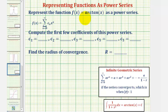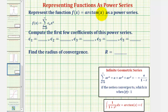We want to represent the function f(x) = arctan(x) as a power series, compute the first few coefficients, and find the radius of convergence. The given function does not resemble the formula for the infinite sum of a converging geometric series. However, recognizing that the integral of 1/(1+x²) with respect to x equals arctan(x) + c, we can use this integration formula to find the power series for arctan(x) by first finding a power series for the integrand.